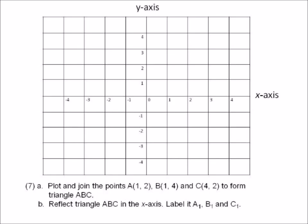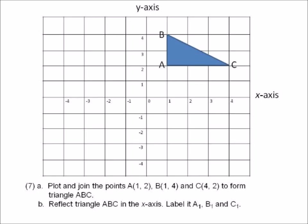Number seven A: plot and join the points A(1,2), B(1,4), C(4,2) to form triangle ABC. Then reflect triangle ABC in the x-axis and label it A1, B1, and C1. Plot and join those points — A(1,2), B(1,4), C(4,2). Take your ruler, form the triangle, and label it ABC. There you have triangle ABC.